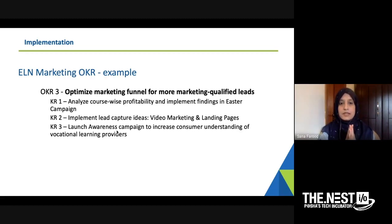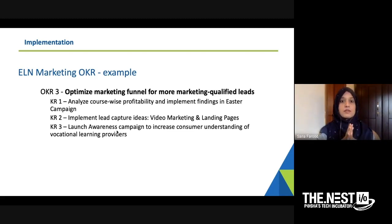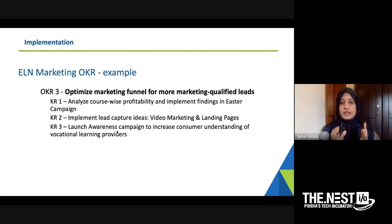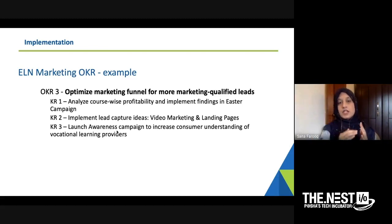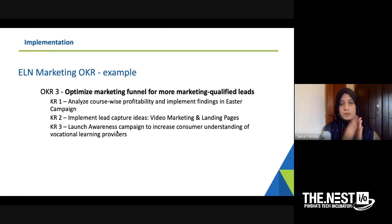Key result two: implement lead capture ideas, video marketing, and landing pages. Key result three: launch awareness campaign to increase consumer understanding of vocational learning providers. The only thing wrong with these OKRs is that the key results are not measurable. Instead of writing 'implement lead capture ideas,' she should have written a number — for example, generate at least one video per week. You have to give a number that can be measured. At the end of the quarter, if she says we've done two or ten videos, I don't know to what percentage she's been successful. You have to have a number.